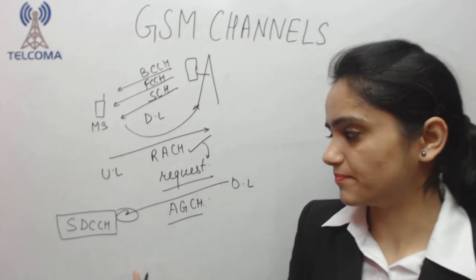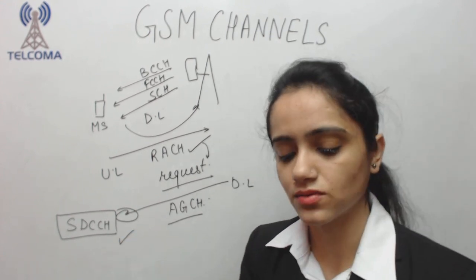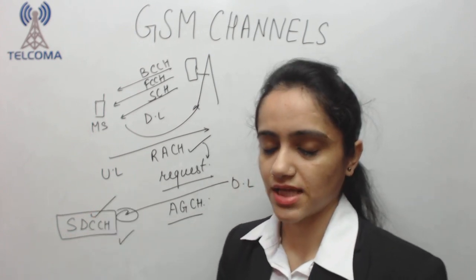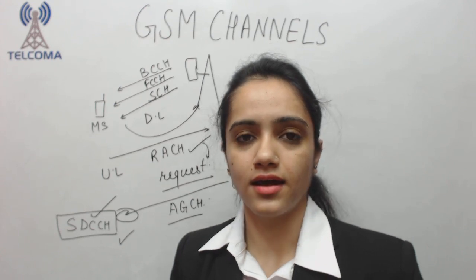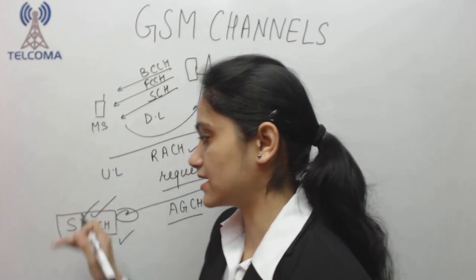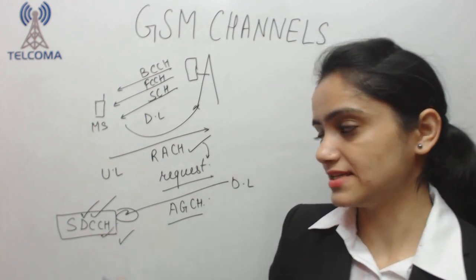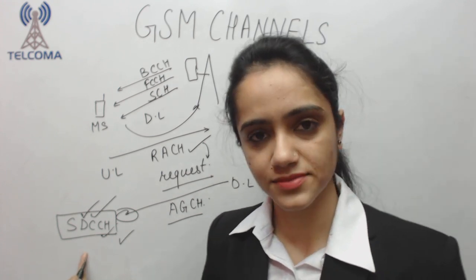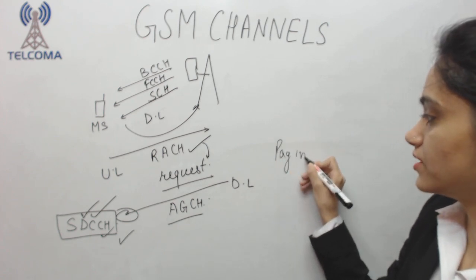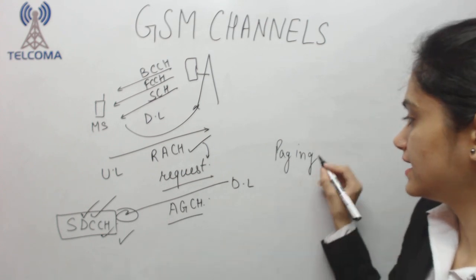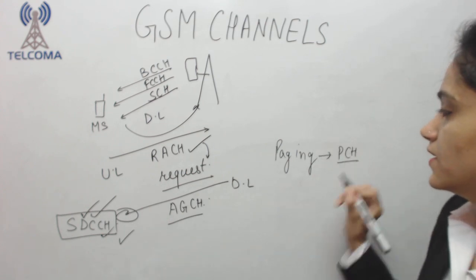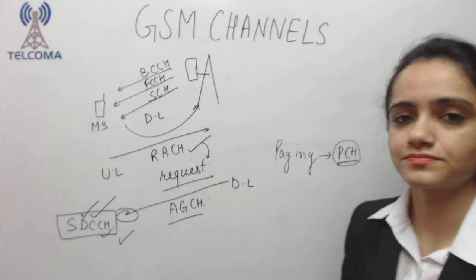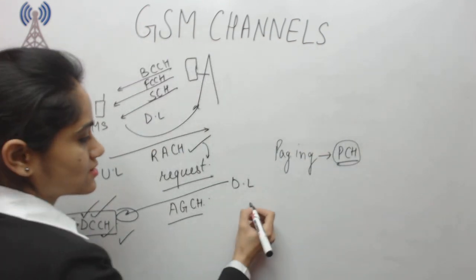A dedicated channel is a channel assigned to us for a specific interval of time. We have SDCCH, the Standalone Dedicated Control Channel, through which all signaling processes are carried out — including HLR and AuC communication. SDCCH is dedicated for a specific time so all these processes are carried through it. Meanwhile, paging messages between the network and the mobile station are carried by PCH, the Paging Channel, which is used whenever the network needs to locate the mobile station.